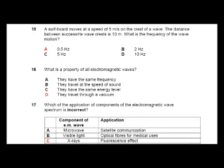Question 15: A surfboard moves at a speed of 5 meters per second on the crest of a wave. The distance between successive wave crests is 10 meters. There's quite a bit of information, let's try to underline the keywords. So the speed, the distance between successive wave crests is 10, and they are asking you for the frequency.